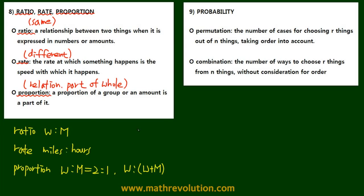In probability, now we have permutation and combination. Permutation is the number of cases for choosing r things out of n things. Combination is the number of ways to choose r things from n things. The difference is in permutation we take into account the order, and in combination we don't.